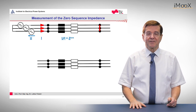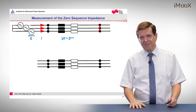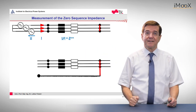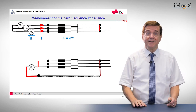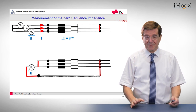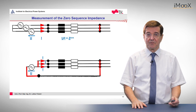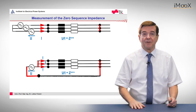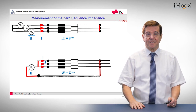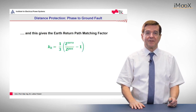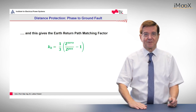The zero sequence impedance is determined in a similar way, but not the same. In this case we short-circuit the line at the end, then short-circuit the three phases together at the beginning and apply a single-phase voltage source to it. That means we generate three identical fault currents through this loop. The quotient of this voltage divided by one of these line currents is the zero sequence impedance. From this we can determine the earth return path matching factor by dividing: zero sequence minus positive sequence, divided by positive sequence, and so on.